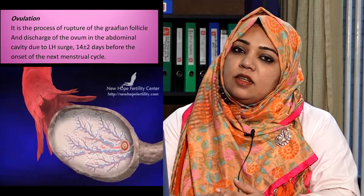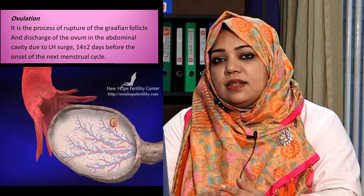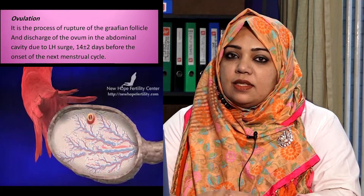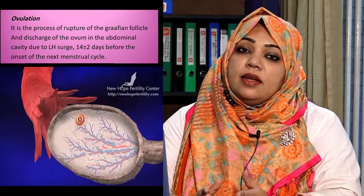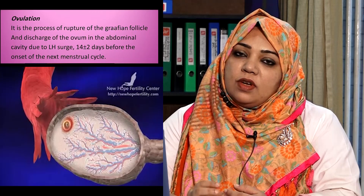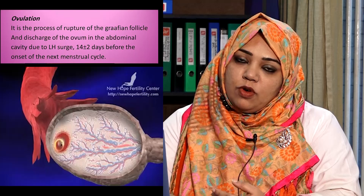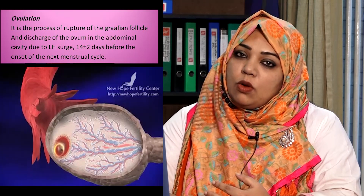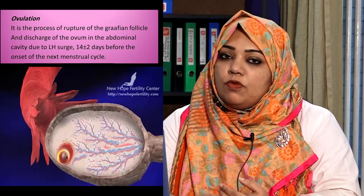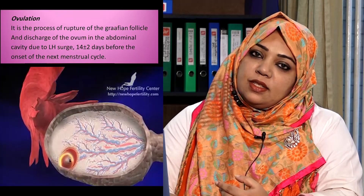In the last lecture, we discussed about the ovarian cycle and we now know that the ovarian cycle had two phases: the follicular phase and the luteal phase. In between these two phases, an event occurred and this event is ovulation. By definition, ovulation is the rupture of the Graafian follicle and discharge of the ovum in the abdominal cavity due to LH surge, 14 plus minus two days before the onset of the next menstrual cycle.